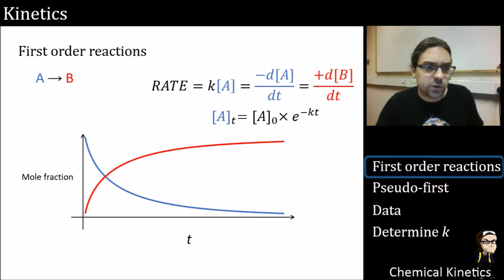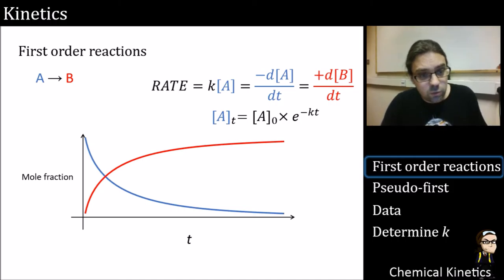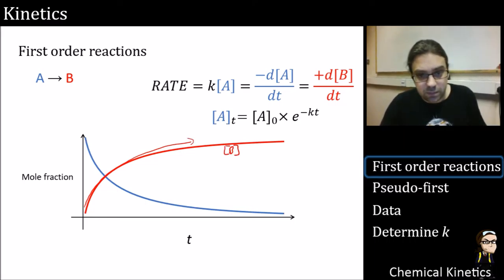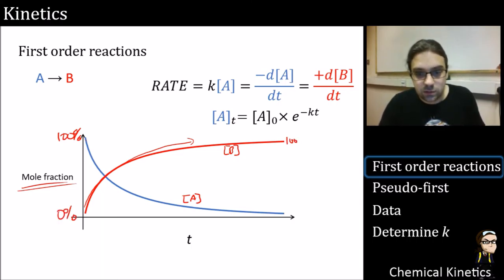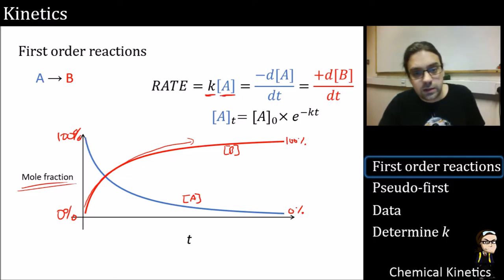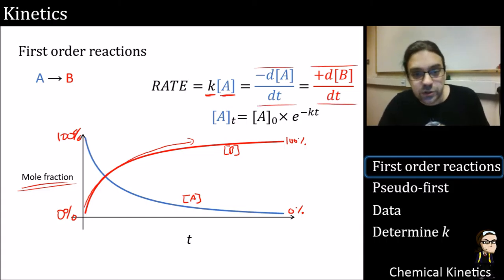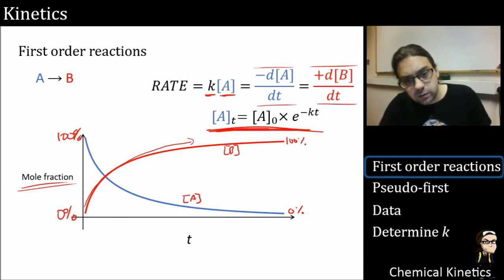Let's look at what it would look like over time. You see one decay — that's the reactants — and the products appear. Written as fractions, this would be like 100% of A going to zero, or 100% of B appearing at the very end. The rate is proportional to a single factor, and we can define that kinetically via our differential equations. This leads to something called the integrated rate law.